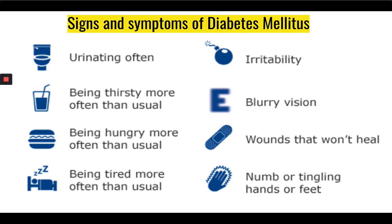What are some signs and symptoms of diabetes? The first one is urinating often, called polyuria — poly means a lot, uria means urine, so you're having increased urination. Polydipsia is increased thirst, so you're much more thirsty and drinking a lot more fluids. Polyphagia is increased hunger — you're eating more.